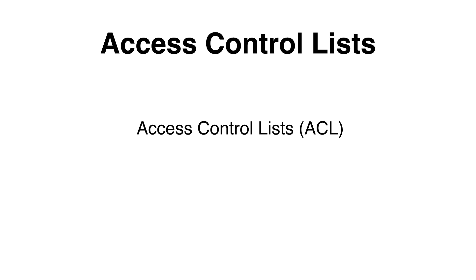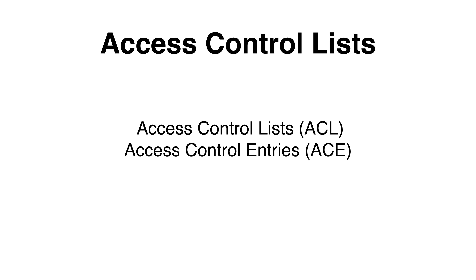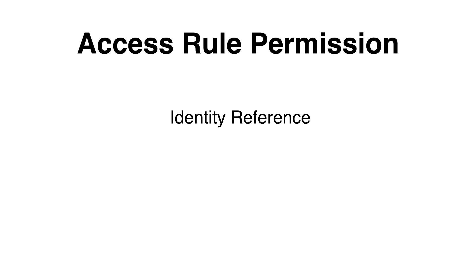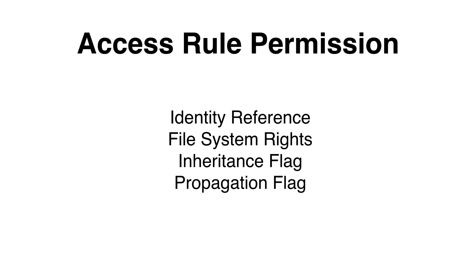Access control lists are a list of permissions attached to an object, also known as ACLs. Each entry in the ACL is called an ACE, or access control entry, that specifies what the object is allowed to do on the Windows file system. In Windows PowerShell we will create an access rule object to set the ACEs, and these rules are set with an access rule permission that specifies what the object is allowed to do. We need to specify an object — this can be a user or a group — in the identity reference. Then we specify the file system rights, the inheritance flag, the propagation flag, and then the ACE type.